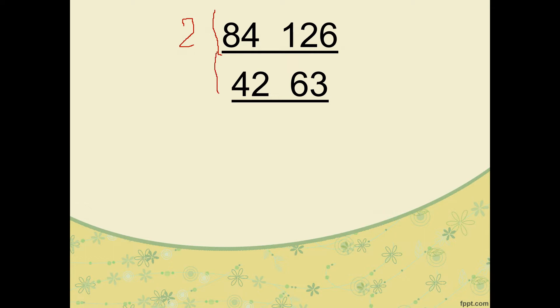42 and 63, we cannot divide by 2, but we can divide by 7. 42 and 63 are divisible by 7. 42 divided by 7 is 6, 63 divided by 7 is 9. Given the numbers 6 and 9, they are both divisible by 3. 6 divided by 3 is 2, 9 divided by 3 is 3.